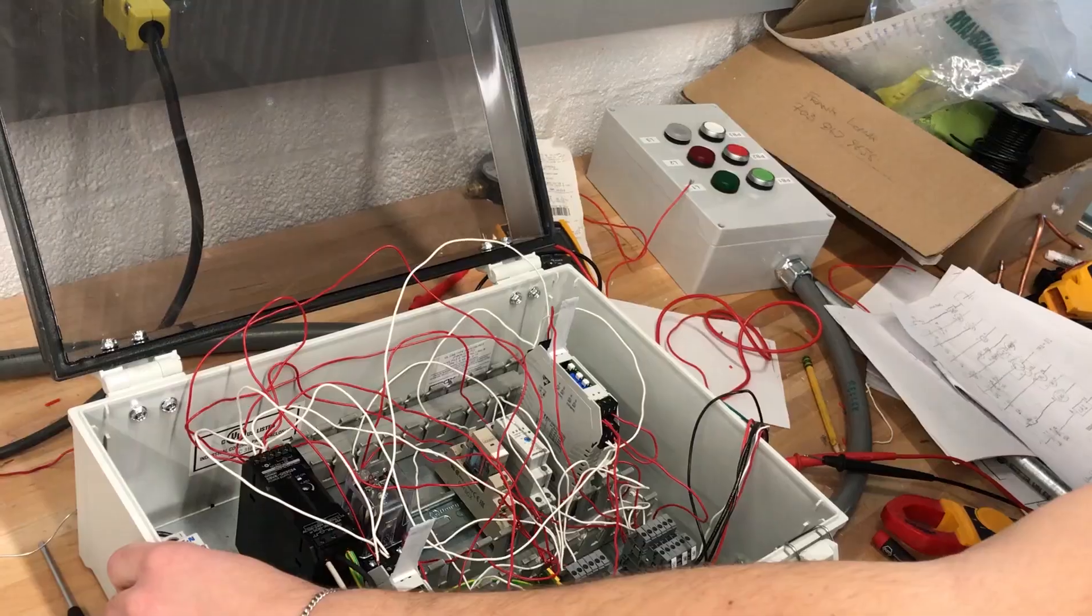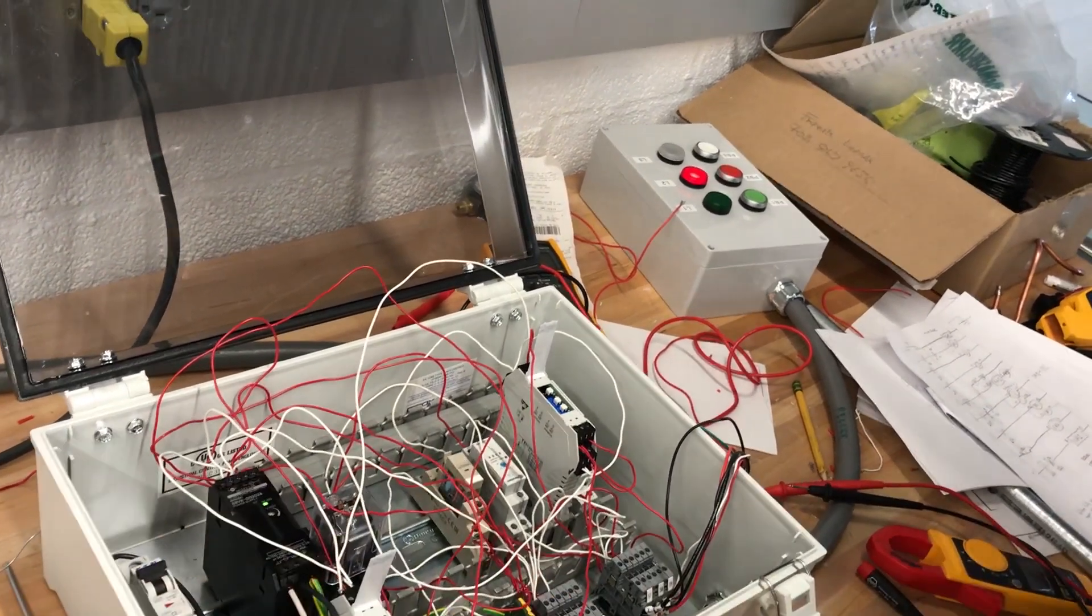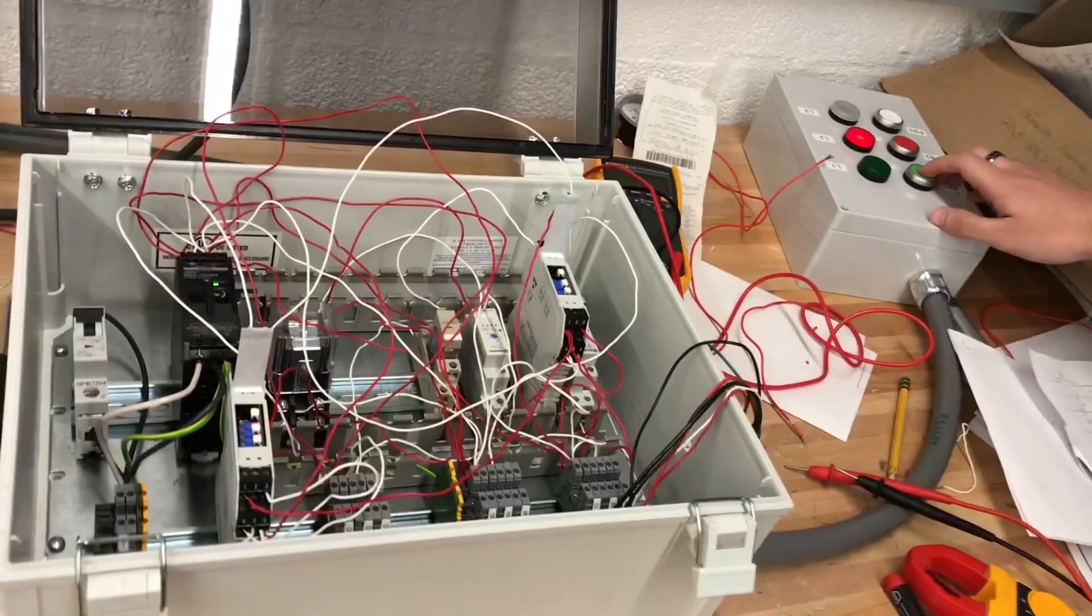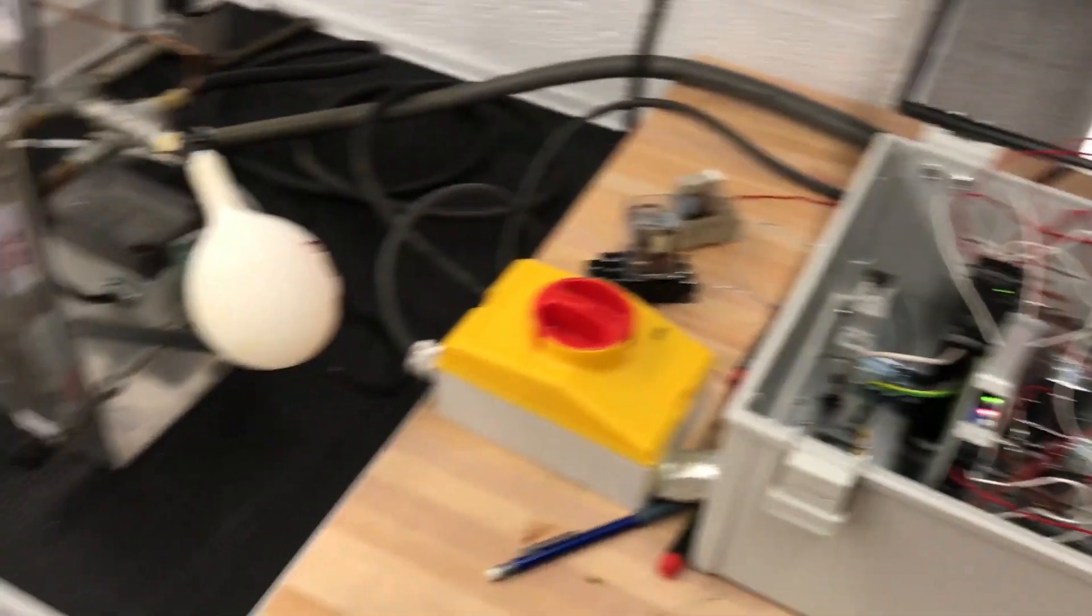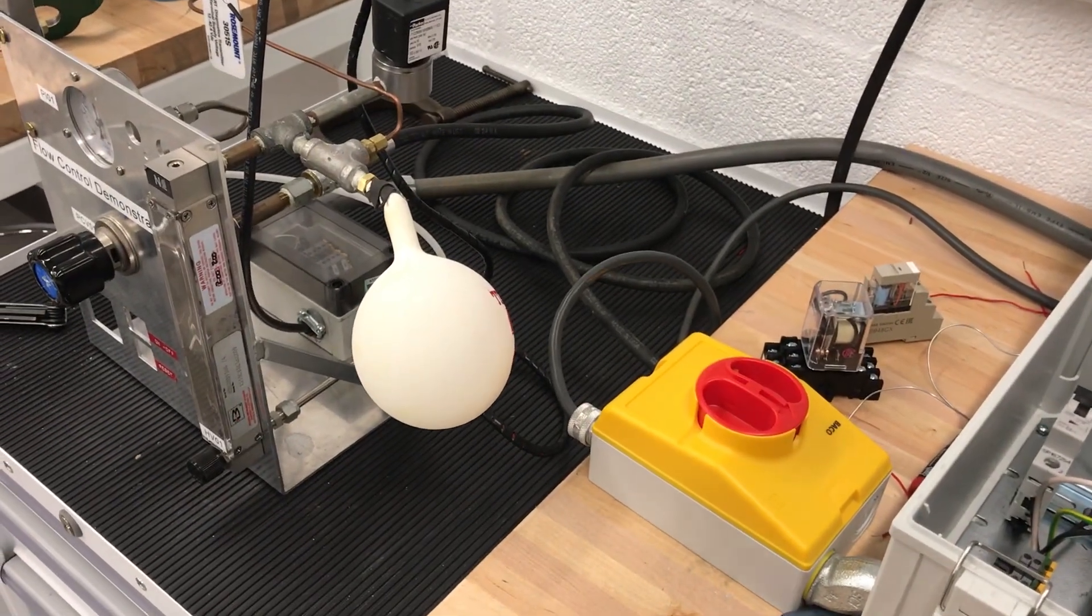Let's see it in action. Here we are demonstrating the ability of the system to trip once hitting an upper pressure limit. Once pressing the green button to fill the balloon, the signal from the pressure transmitter passes through the first alarm relay, which will